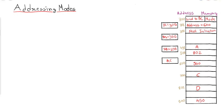Hello students, let us start our discussion. In the previous tutorial we discussed what an instruction is and how many types of instructions there are according to addresses. We saw which instruction is used in which organization — zero address, one address, two address, three address — and we discussed RISC instructions. So after discussing instructions, let us now discuss the various ways to address data in memory.